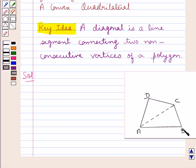Similarly, we can join B and D, the two non-consecutive vertices of A, B, C, D. So after joining B and D, we get another line segment BD.